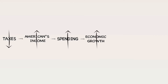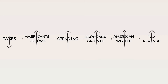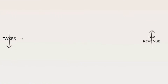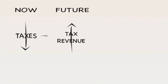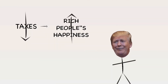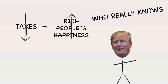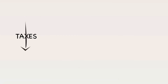When an economy grows, the population becomes wealthier. And when people are wealthier, they have more taxable income. So theoretically, by cutting taxes now, the overall tax revenue will increase in the future. This is most likely Trump's reasoning for his proposed tax cuts — either that, or he just wants to give tax breaks to all of his rich friends. In any case, cutting taxes now is only going to increase our debt, at least in the short run.